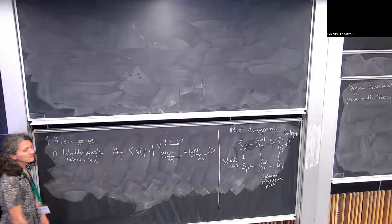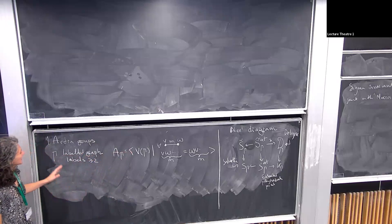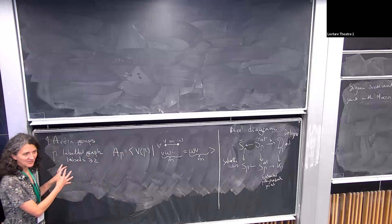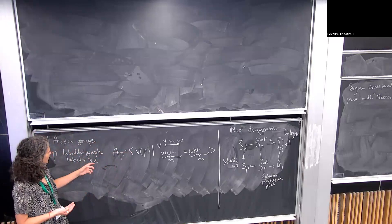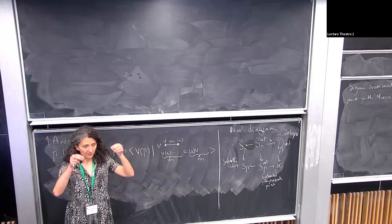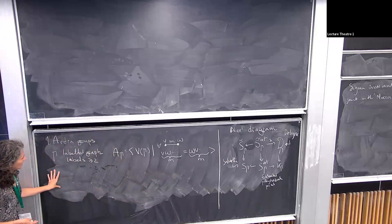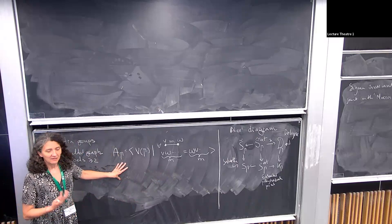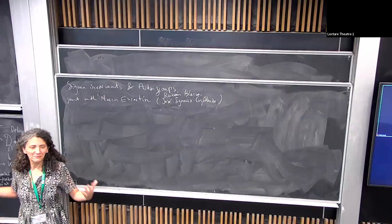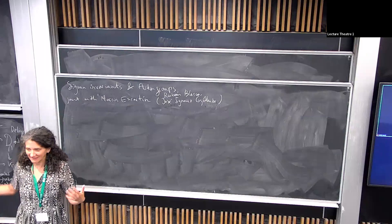This is my definition of an Artin group — I think it's the same as Alex's definition. I take a labeled graph and I use graph notation, which allows us to see the presentation of the group. I have a graph, I have labels, and I have relators. If there is no labeled edge between two vertices, there is no relator. These groups, as we heard in Ruth's talk, are rather mysterious — we know very little about them, but we will know a lot once the conjecture she was mentioning is proved. I'm going to work with Artin groups that satisfy that conjecture.